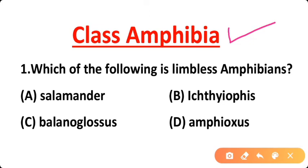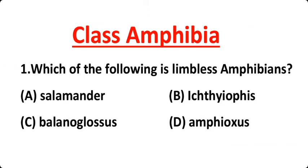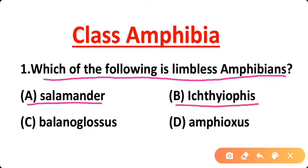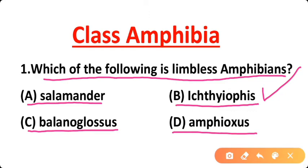Question number one: Which of the following is a limbless amphibian? Option A: Salamander, Option B: Ichthyophis, Option C: Blenoglossus, Option D: Amphioxus. The correct answer is Option B — Ichthyophis is a limbless amphibian and it also has no tongue.